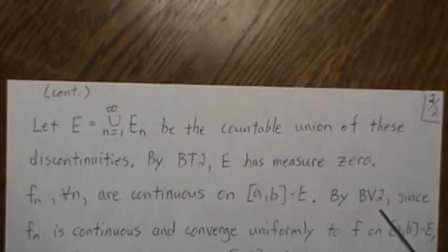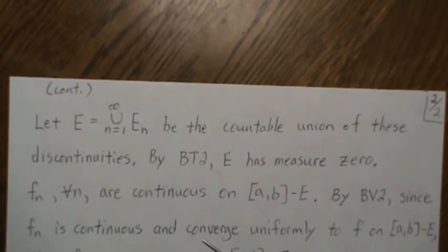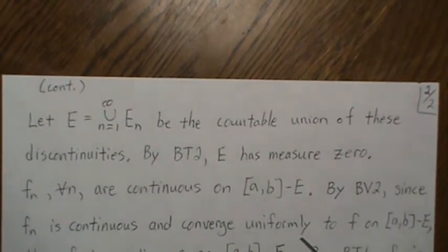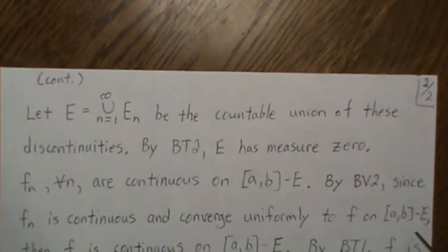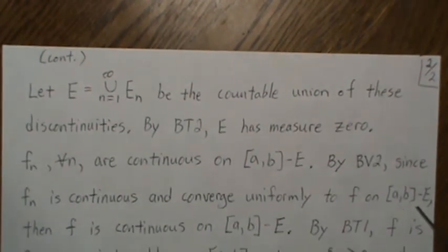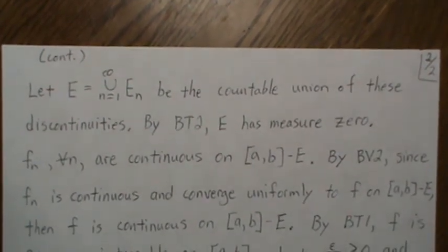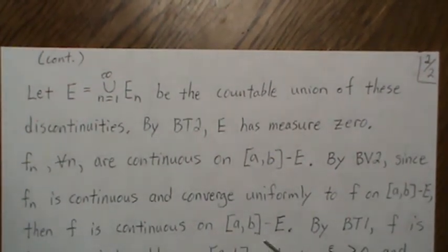Now by background video 2, since f_n is continuous and converges uniformly to f on this set [a,b] minus E, then f is continuous on this set.